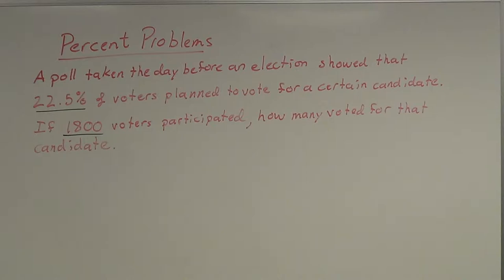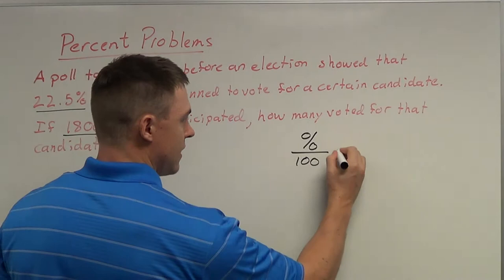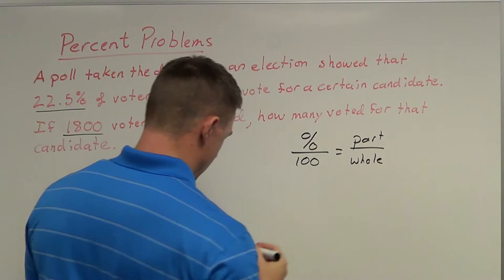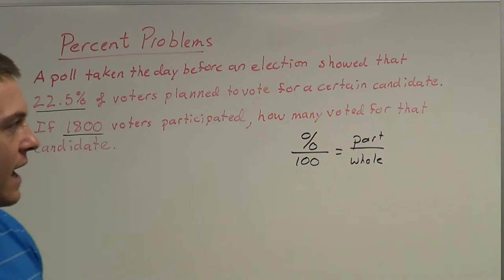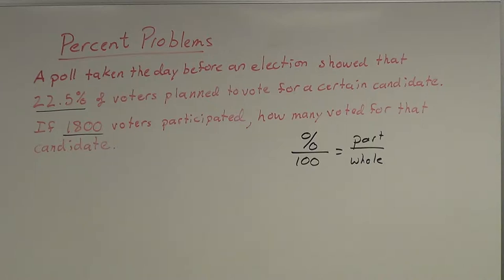Whenever you encounter a percent problem, there is one kind of formula that is really very useful for these types of problems. That formula is: percent over 100 is equal to the part over the whole. Notice that a proportion is just a fraction equal to a fraction, and that's what we have here. This formula is just a proportion — something we commonly use for percent problems to make them a little bit simpler.